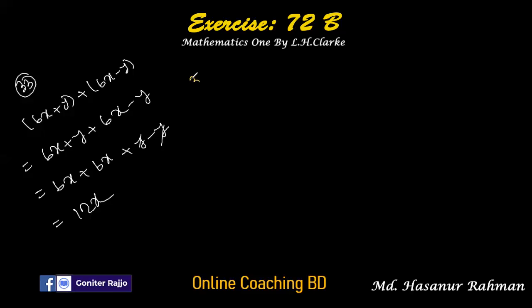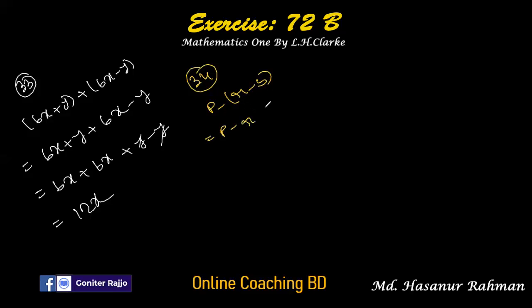Number 34 says p minus r minus s. Removing the bracket: minus into r is minus r, minus into minus s is plus s. Answer is p minus r plus s.